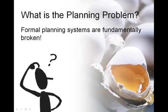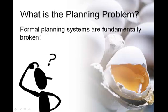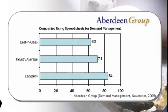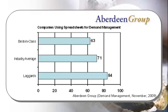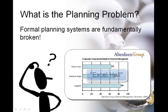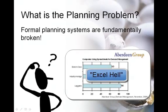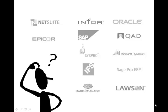How do we know they're broken? Let's consider some staggering research done by the Aberdeen Group in 2009. This study concluded that most companies are using spreadsheets, not their ERP system, for demand management. In many companies, this has created an effect referred to as XL Hell.